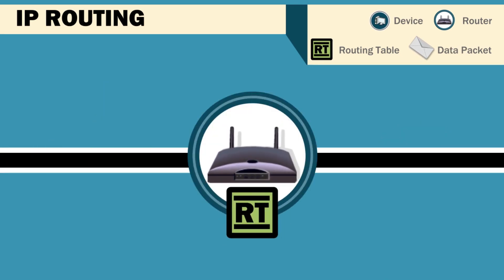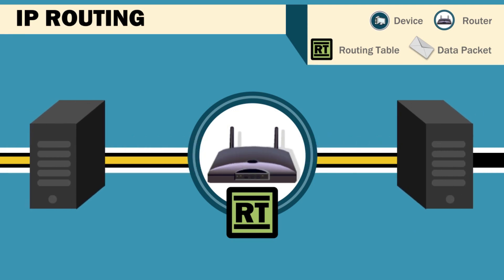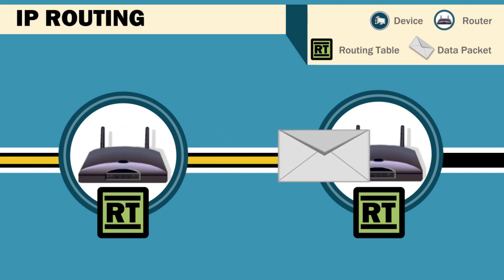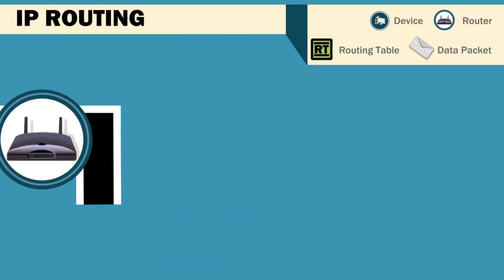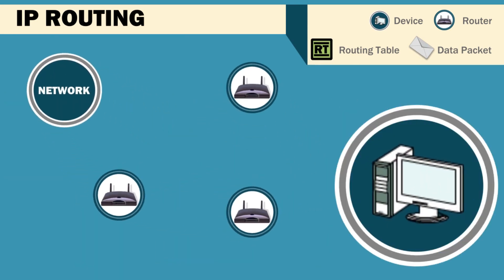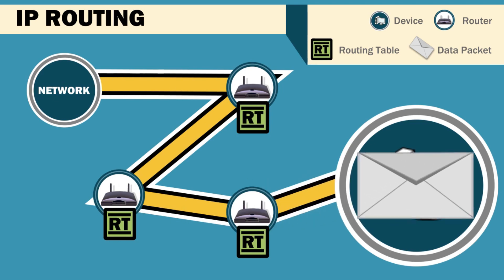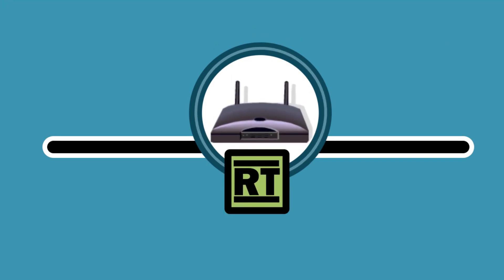All routers use routing tables to forward a data packet from the sending device to the destination. Each router is unaware of the next router's tables. All each one can do is forward the packet to the next hop on the path. Today, you've examined how routing works. You've explored networks, routers, end devices, and routing tables, and you've seen how they work together to move data packets along a path. Knowing how data travels helps you, as a network professional, when the network breaks down.